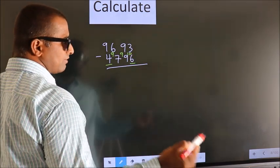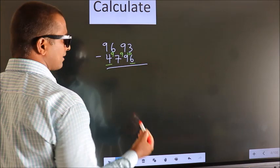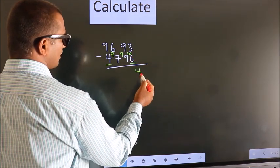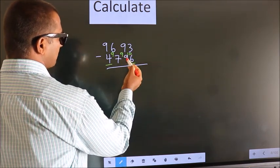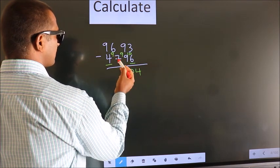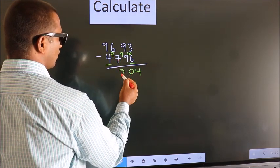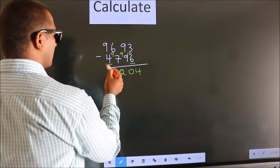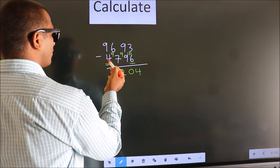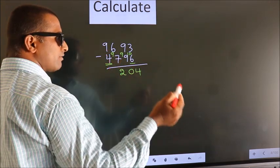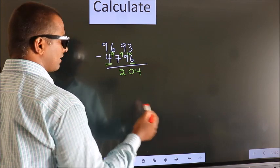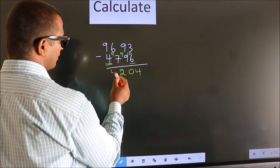Now we subtract 10 minus 6, that's 4. 9 minus 9 is 0. 9 minus 7 is 2. Now for the first digit we do 9 minus 4, we get 5. Decrease more by 1, we get 4.